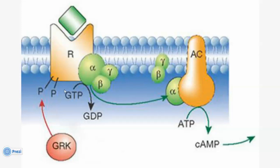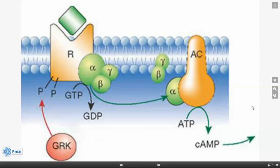When the alpha subunit binds to GTP, it dissociates from the other subunits and goes to an enzyme called adenylate cyclase, attaching to it and activating it. This causes the enzyme to convert ATP into cyclic AMP, which then continues the cellular function. To summarize: three subunits, alpha binds GTP and is activated, goes to adenylate cyclase, and converts ATP into cyclic AMP.